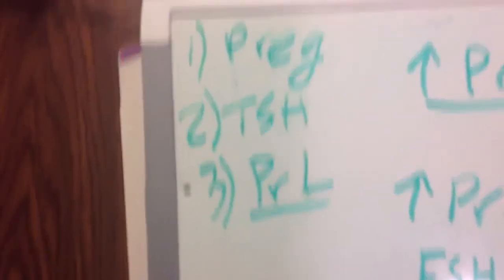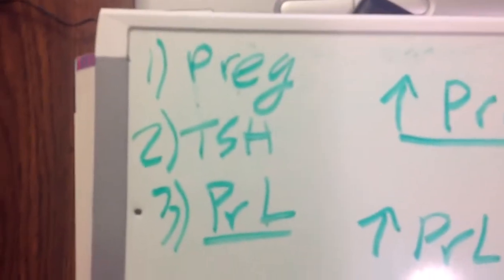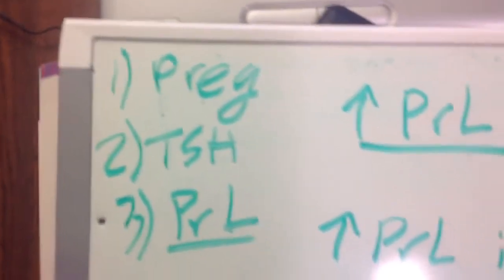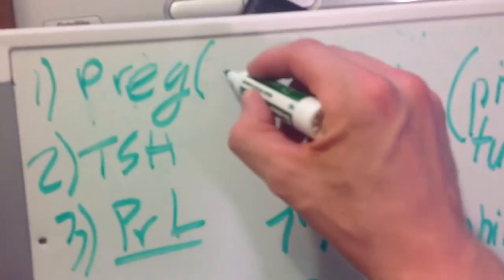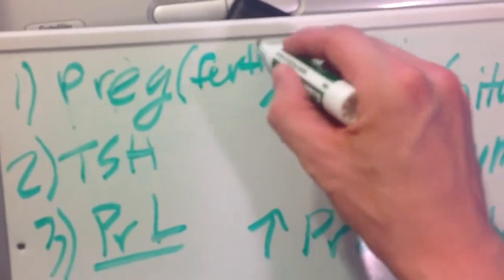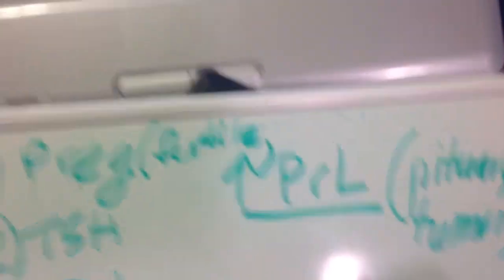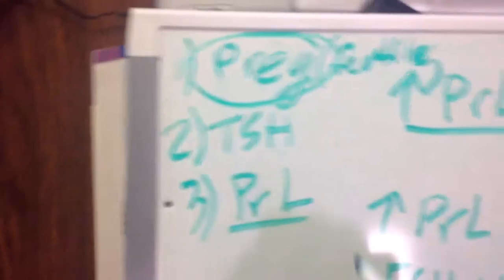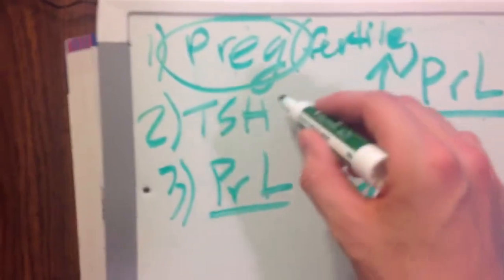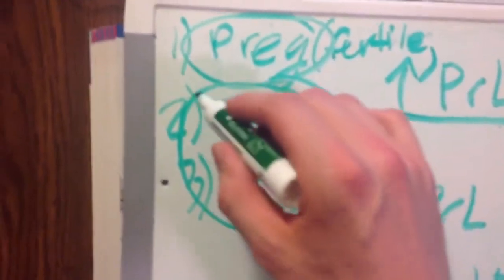So those are the first three things you do for the workup of secondary amenorrhea. Pregnancy test always. If she's fertile, maybe she's not using protection, pregnancy test is first. Your second test is always going to be TSH prolactin. I have it written two, three, but you get them together. You want to rule out these causes first.